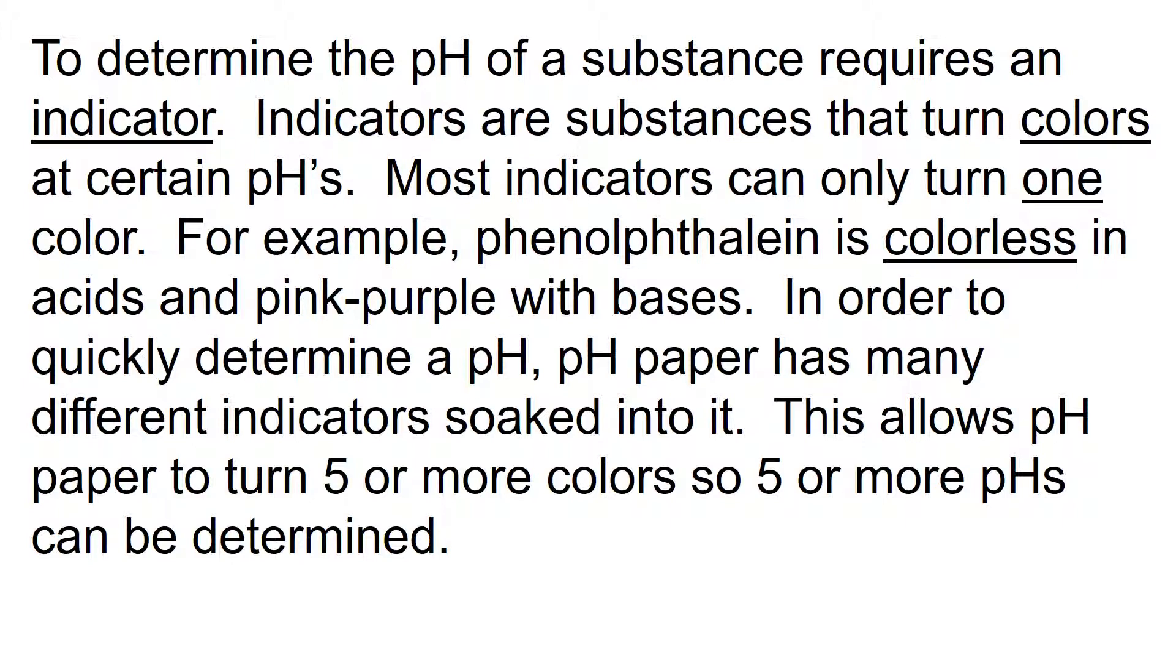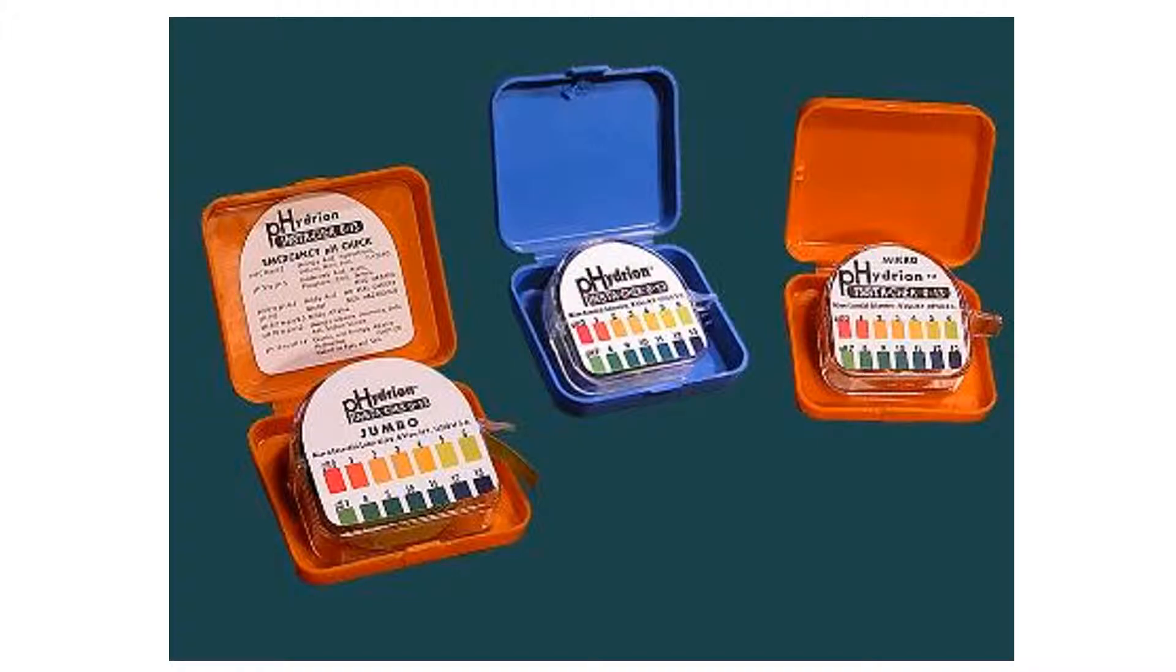To determine these pHs we need an indicator. In order to quickly determine a pH, we can use pH paper. pH paper has many different indicators soaked into it which allows the paper to turn five or more colors so that pHs can be more easily determined. Here's what pH paper looks like. If you look at the charts on the container of pH paper, you'll see these colors, and these colors indicate the pH. They're not for getting a whole lot of significant digits, therefore estimating the pH in basically a whole number, pH of 2, 3, 4. There are some pH papers that are designed around specific ranges that can do a little bit better than that, but generally, these pH papers are for the whole numbers.